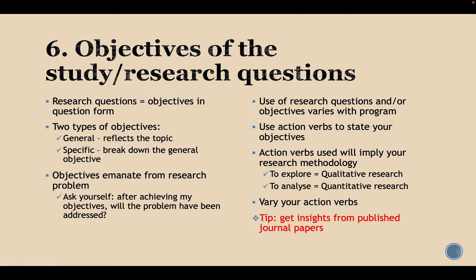Something I have found useful when varying action verbs and specifying research objectives is to get insights from published journal papers. Create an Excel file with about three columns: the first for the objectives of each study you read, the second for the action verb used, and the third for the research methodology used alongside that objective. This helps you build a list of action verbs and understand how each verb implies which research methodology you should use.